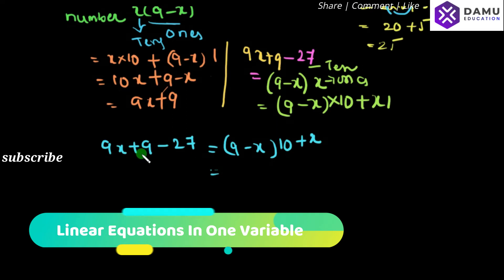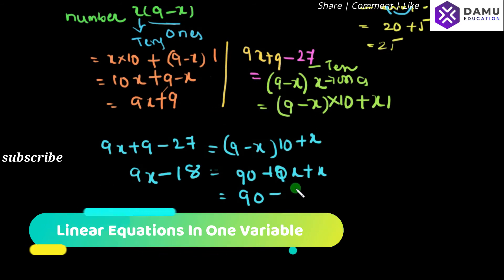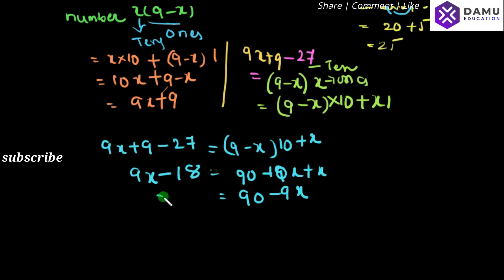Expanding the right side: 9 minus x into 10 gives 90 minus 10x, plus x. So on the left we have 9x minus 18, and on the right we have 90 minus 10x plus x, which is 90 minus 9x. Bringing like terms together: 9x plus 9x equals 90 plus 18.